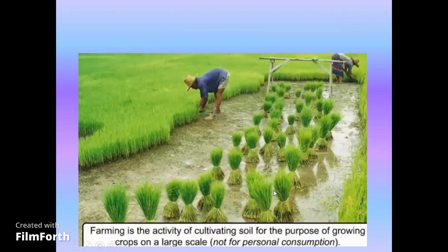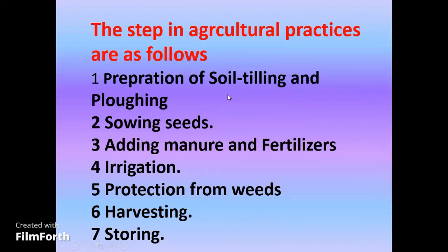Farming means planting, and there are different steps. The first step is soil tilling and plowing. The second step is sowing seeds. The third step is adding manure and fertilizers. The fourth is irrigation. The fifth is protection from weeds. The sixth is harvesting, and the seventh is storing. So there are seven steps which come under agricultural practice.